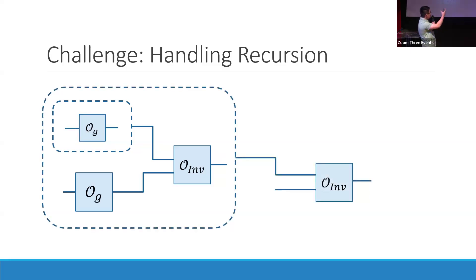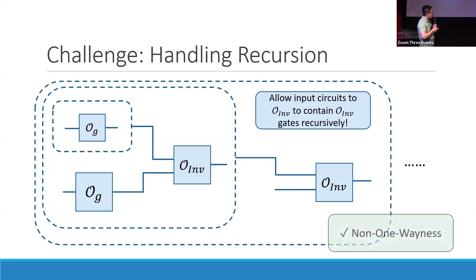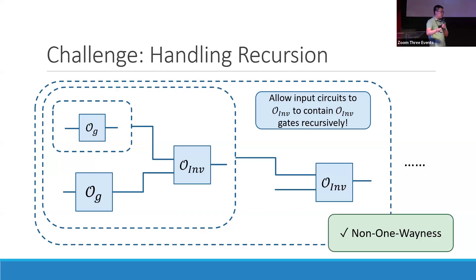This means our definition for the inversion oracle must be recursive, in the sense that the input to the inversion oracle could contain inversion gates recursively. With this definition, it's still fine for us to define the inversion oracle, because we just need to count the total number of gates within this recursive circuit. So if you construct any circuit using binary gates, multiplication gates, and inversion oracle gates, we can plug that into an inversion oracle and it will invert the circuit. In that way, you cannot construct any one-way function if we have these oracles.